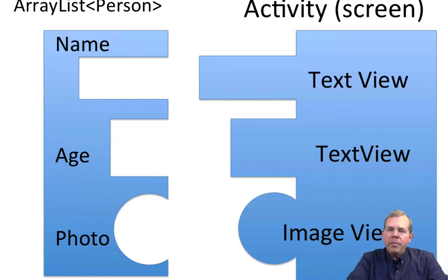The activity on the screen might have three different components for each list item. You might have a text view for the name, a text view for the age, and then you'd have another type of view called an image view, which will show a photo.